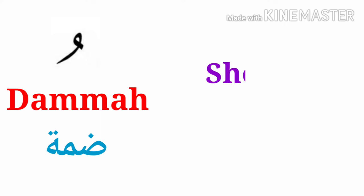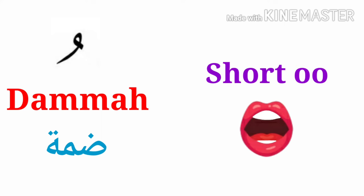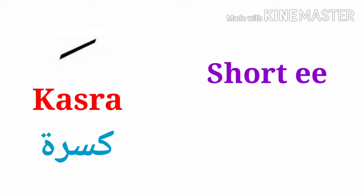This is the dhamma. Dhamma is also written above the letter and represents a short 'u' sound. This is the kasra. Kasra refers to a short 'i' or 'e' sound.